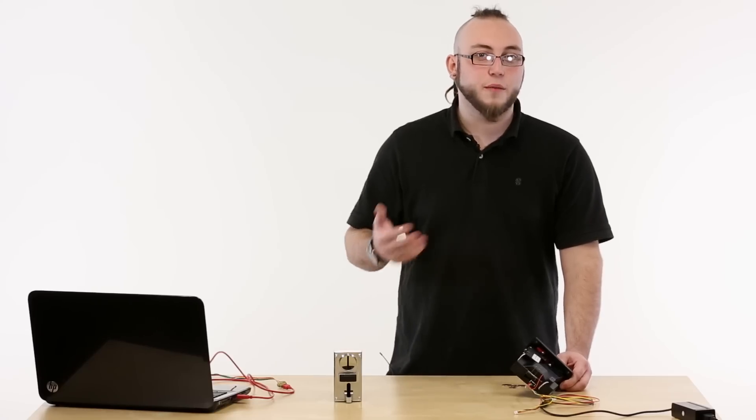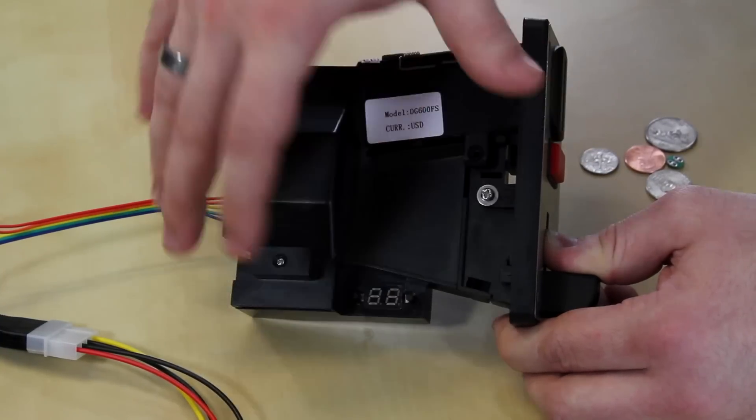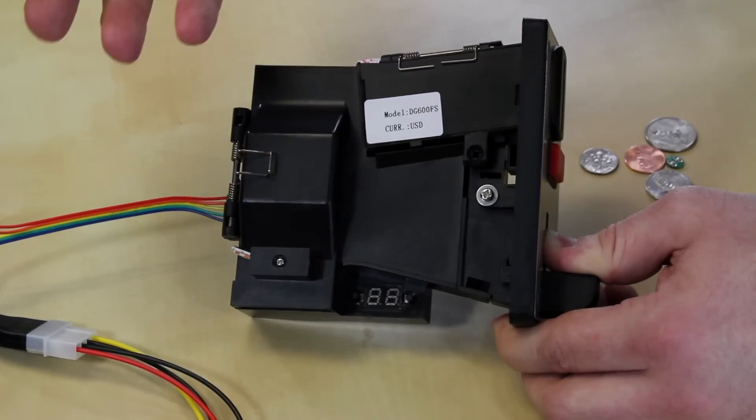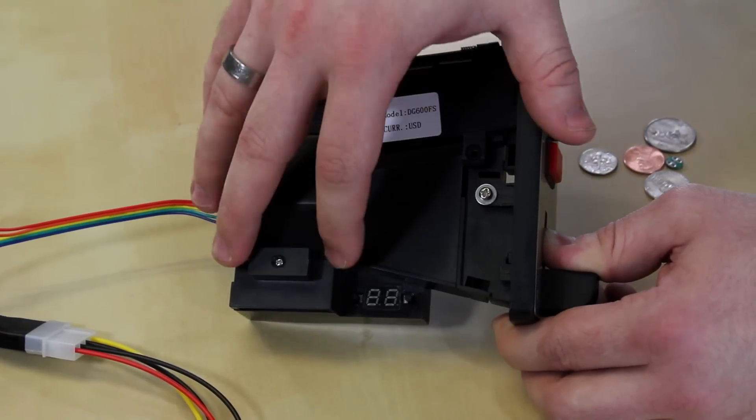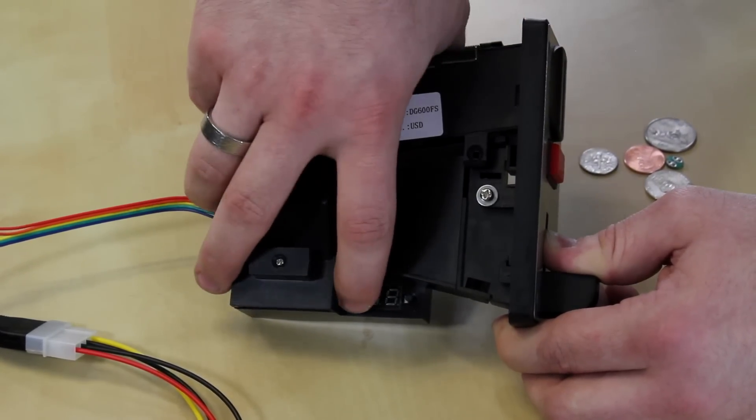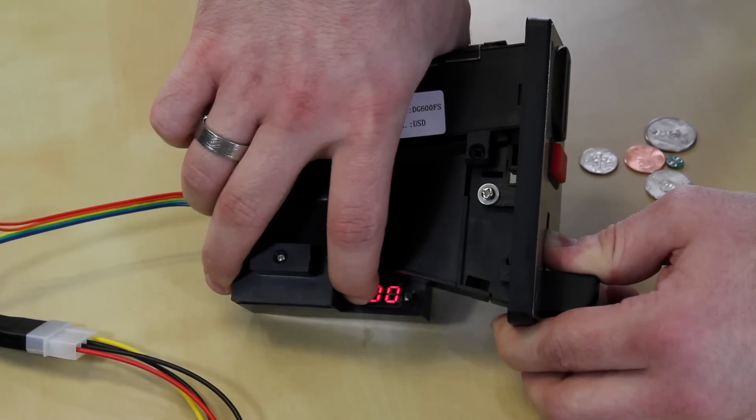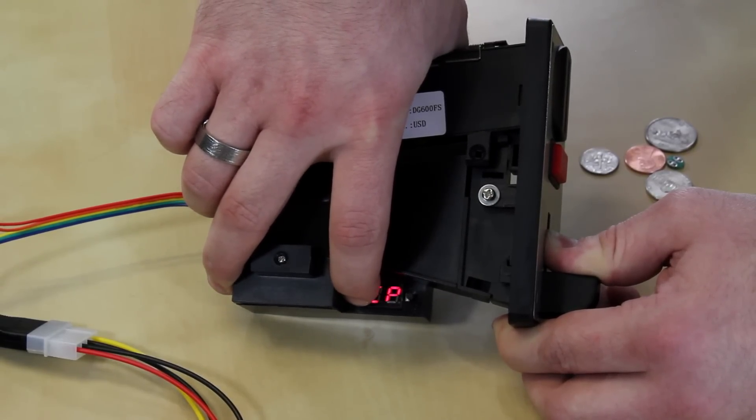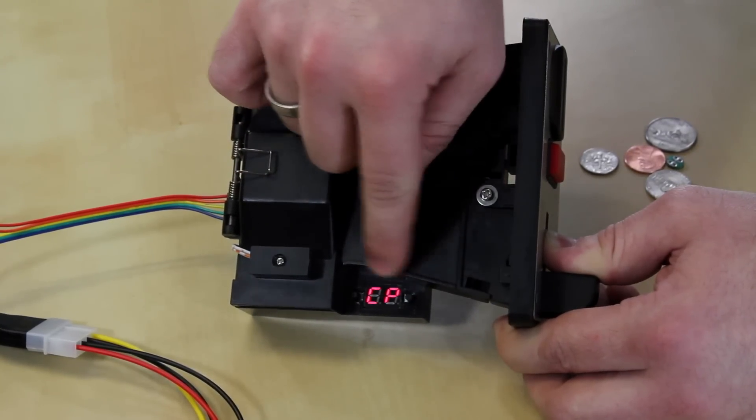Programming this thing is actually pretty easy. It has this seven segment display on the side of the unit and these two buttons and that's actually what you use to program what they call coin parameters into the unit. So to program your coins in you're just going to hit the A button here and it will come up with double zeros. If you hold that A button for a few seconds it will make an annoying beeping sound and then it will show you CP and that stands for coin parameters.